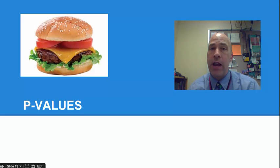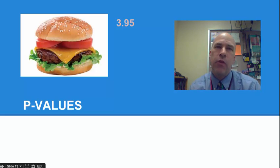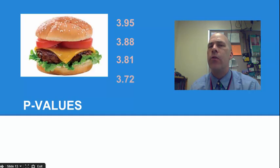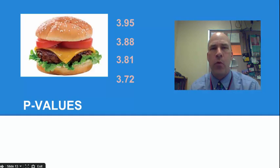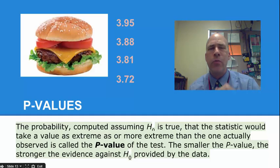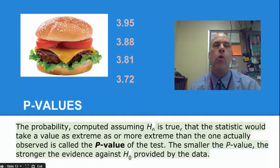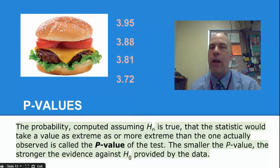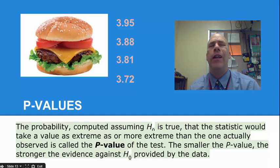Let's go back to my hamburgers. Let's say I collected some hamburgers and I took their mean weights. What if it came out as 3.95? That doesn't seem really that far away from 4. What if it was 3.88, 3.81, or 3.72? Some of these would provide stronger evidence against the claim that the patties are actually 4 ounces. The way we assess this is by using a p-value. A p-value is the probability, assuming that the null hypothesis is true, that the statistic we collect would take a value as extreme or more extreme than the one actually observed. The smaller the p-value, the stronger the evidence against the null hypothesis.